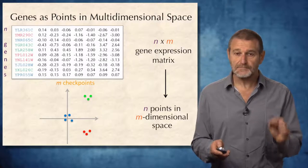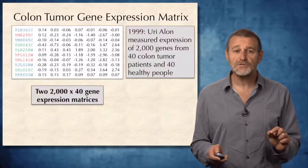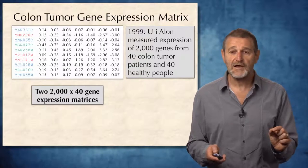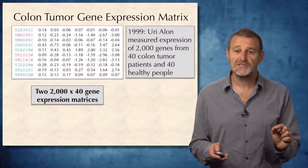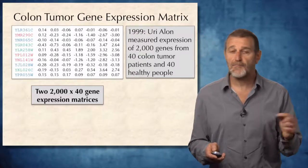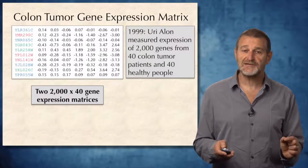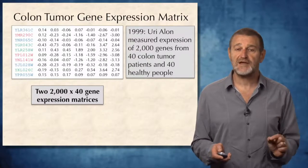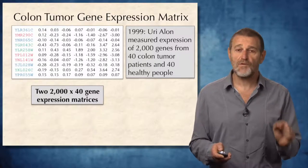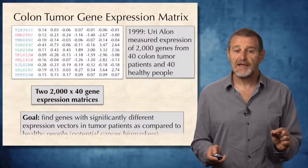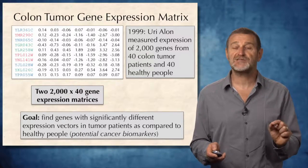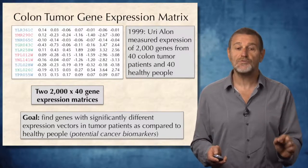So far we've talked about yeast gene expression, but we can also talk about expression of genes implicated in cancer. In 1999, Uri Alon measured the expression of 2,000 genes from 40 samples of colon tumors from cancer patients and compared it with the gene expression matrix constructed for the same 2,000 genes for healthy patients. In this case, the result is not one but two 2,000 by 40 gene expression matrices. The goal in this case is to find genes with significantly different expression vectors in tumor patients as compared to healthy people.